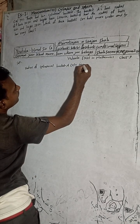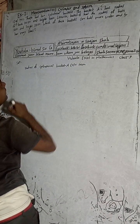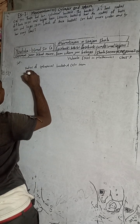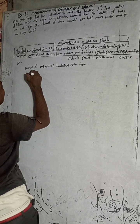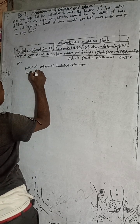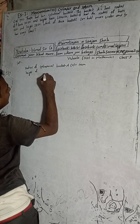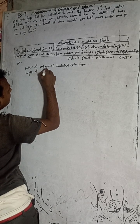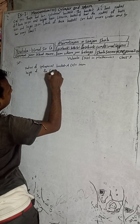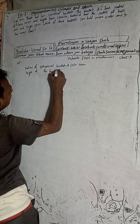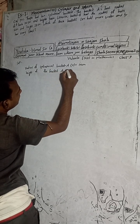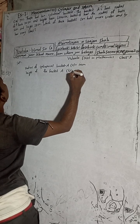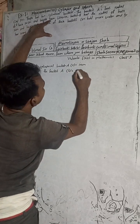And now height of the bucket A, H is equal to 30 cm.